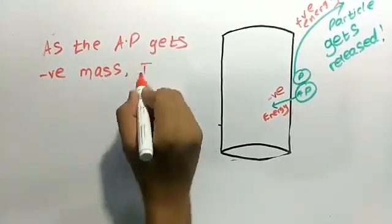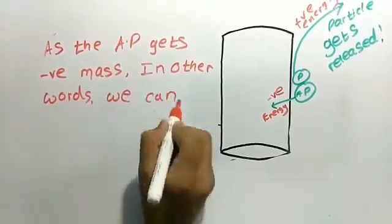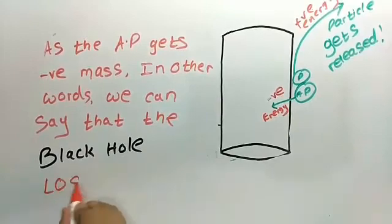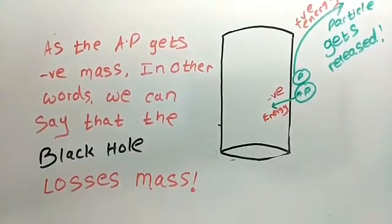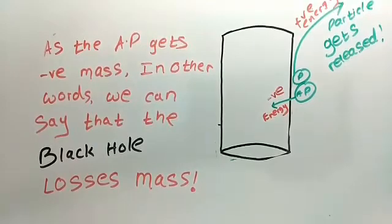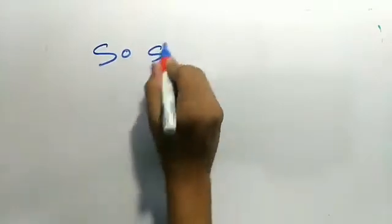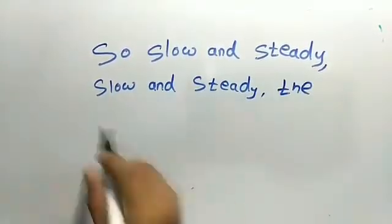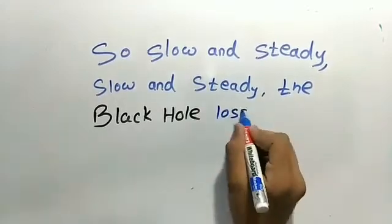In other words, we can say that as the anti-particle gets negative mass, the anti-particle goes towards the black hole, the black hole loses its mass. So slowly and steadily, the black hole loses its mass, a particle after particle.